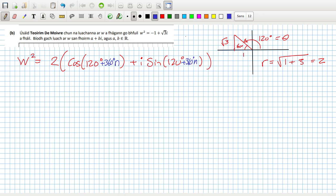And then De Moivre's said to root that, you would root this and you would root this, but the half goes in as a multiplication on the angle. So you'd get w would equal root two cos 60 degrees plus 180 degrees times n, plus i sine 60 degrees plus 180 degrees times n.